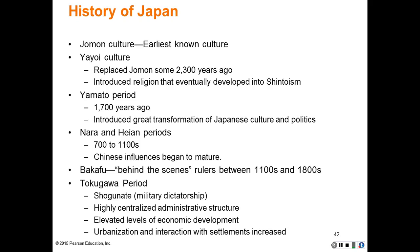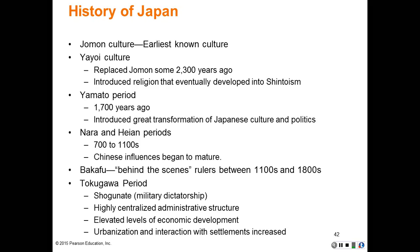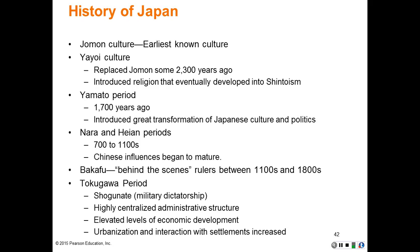Osaka was the premier commercial and business center of Honshu. After unwelcome initial visits by European vessels, the Tokugawa government isolated Japan from foreign contact and competition. The Tokugawa period and Japan's isolation soon ended after American Commodore Perry's arrival in Tokyo Bay in 1853, which opened Japan's core area to global trade.